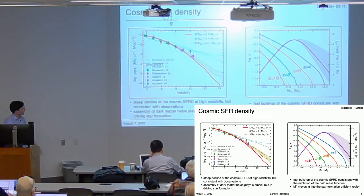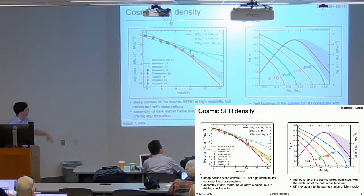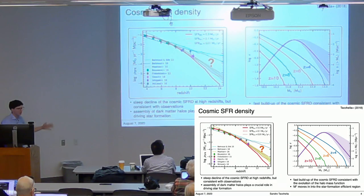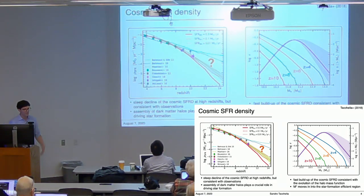One can play around with these models—for example, by changing the star formation efficiency with redshift. You get similar trends at lower redshifts, but there is an interesting divergence of the models from redshift 10 onwards. The question is what you can learn there, in particular with JWST.